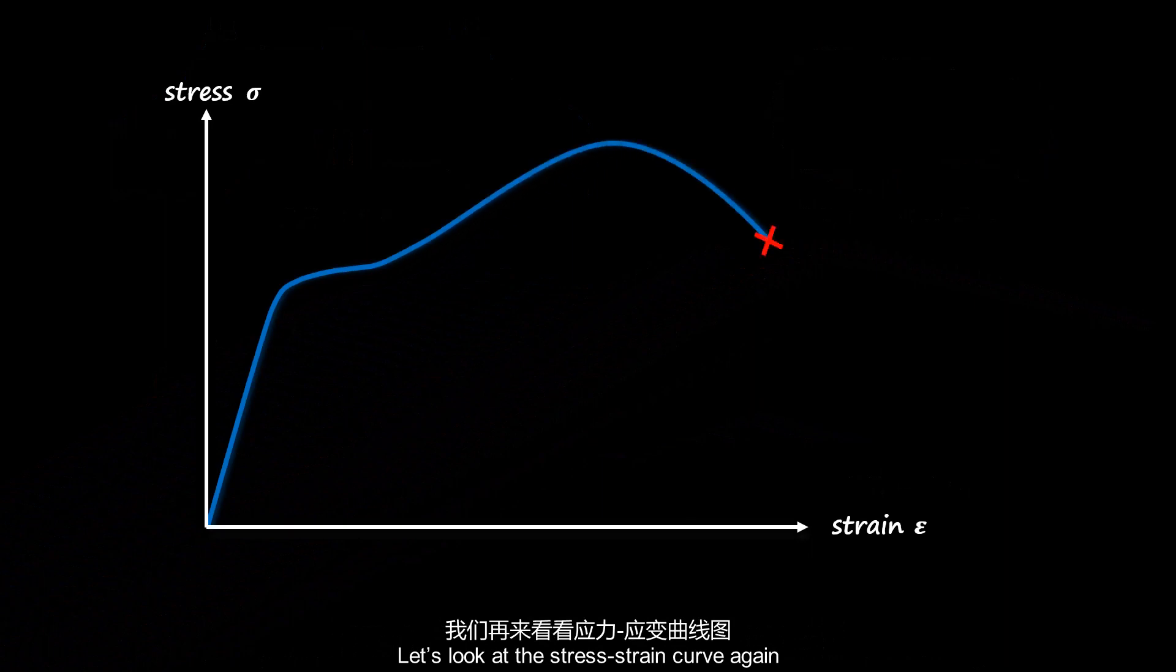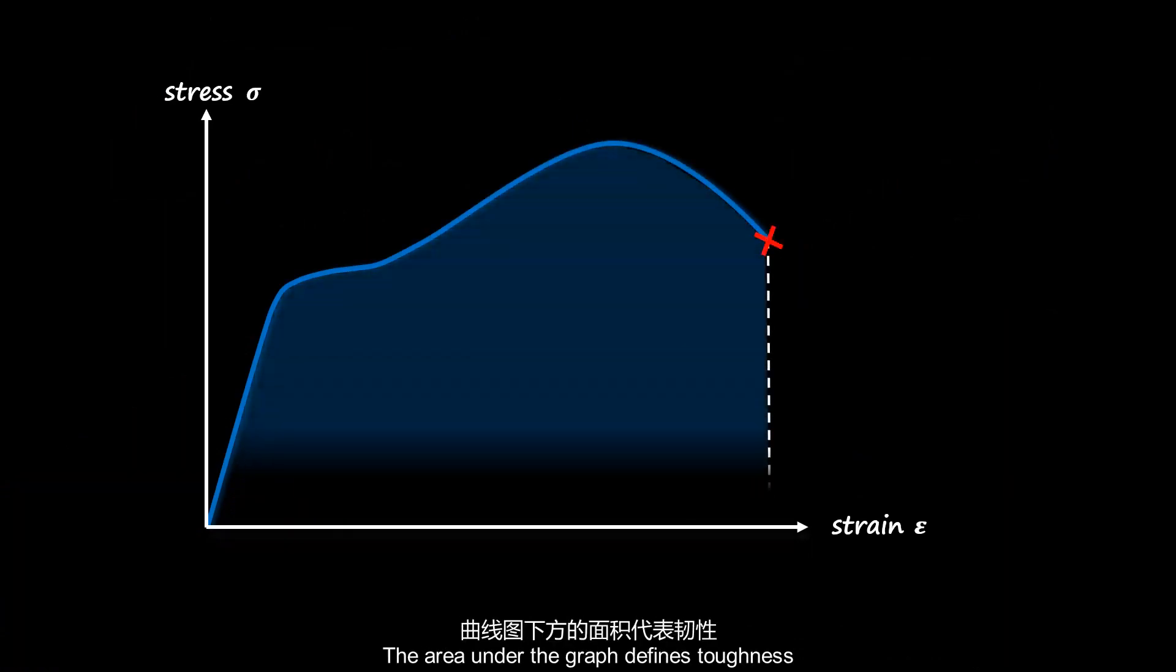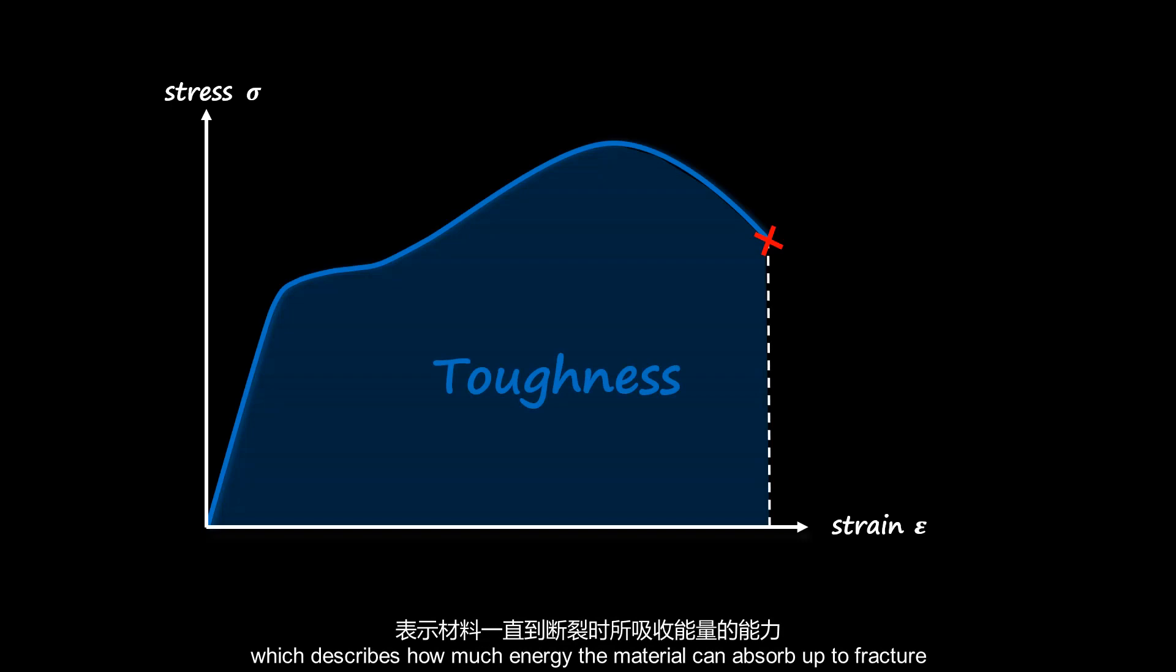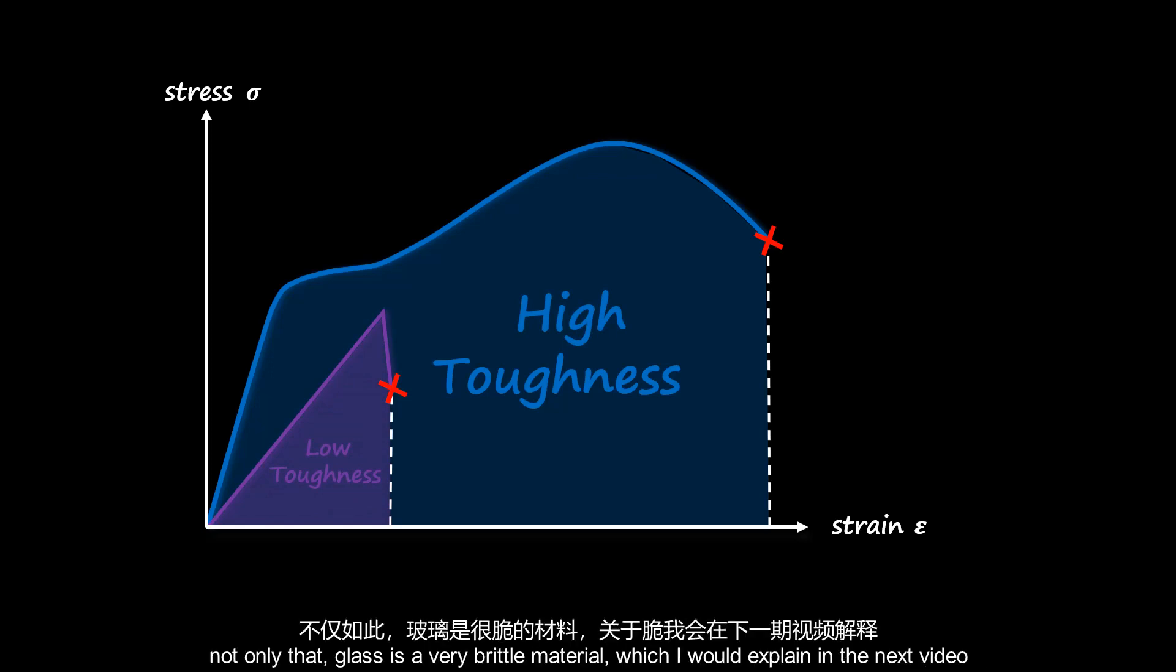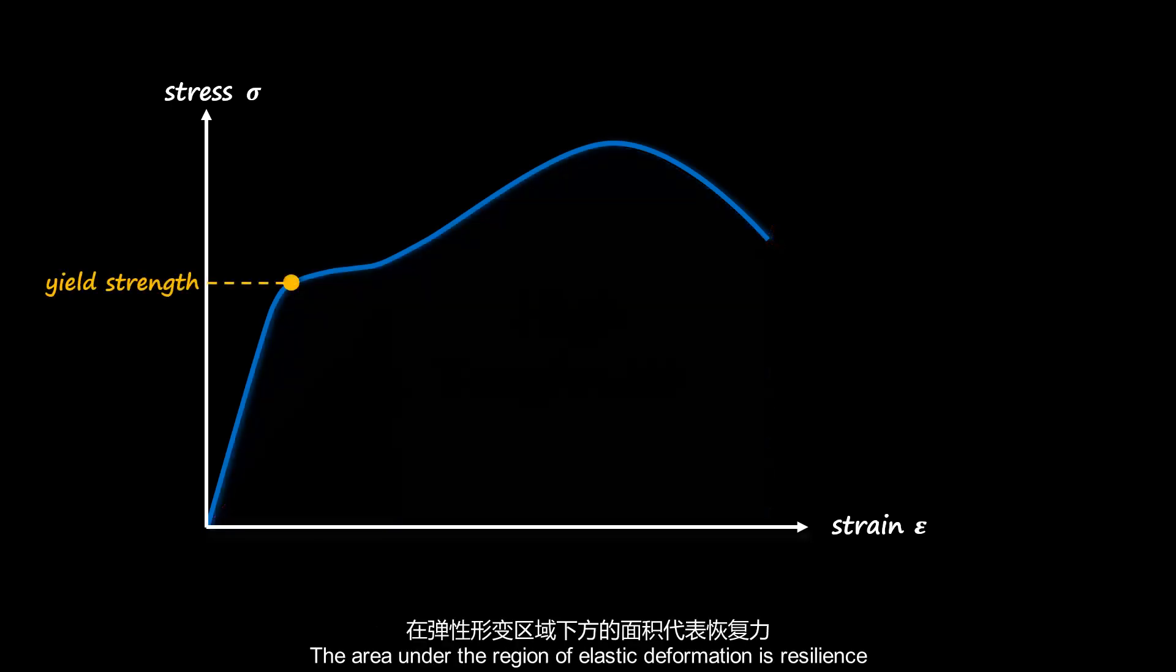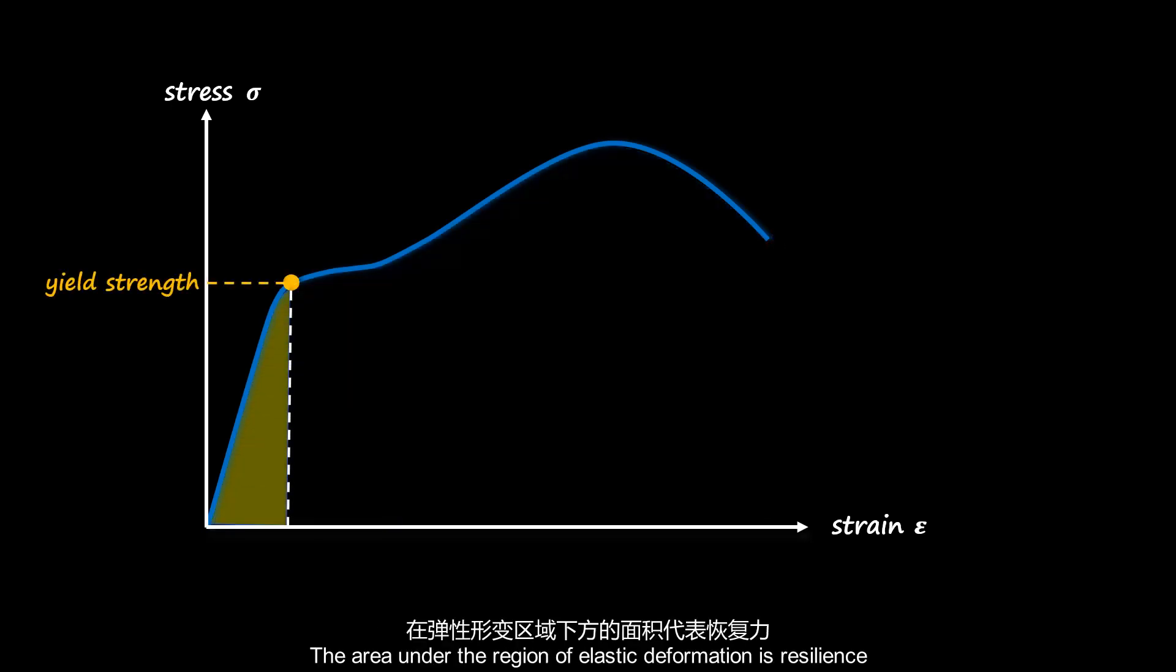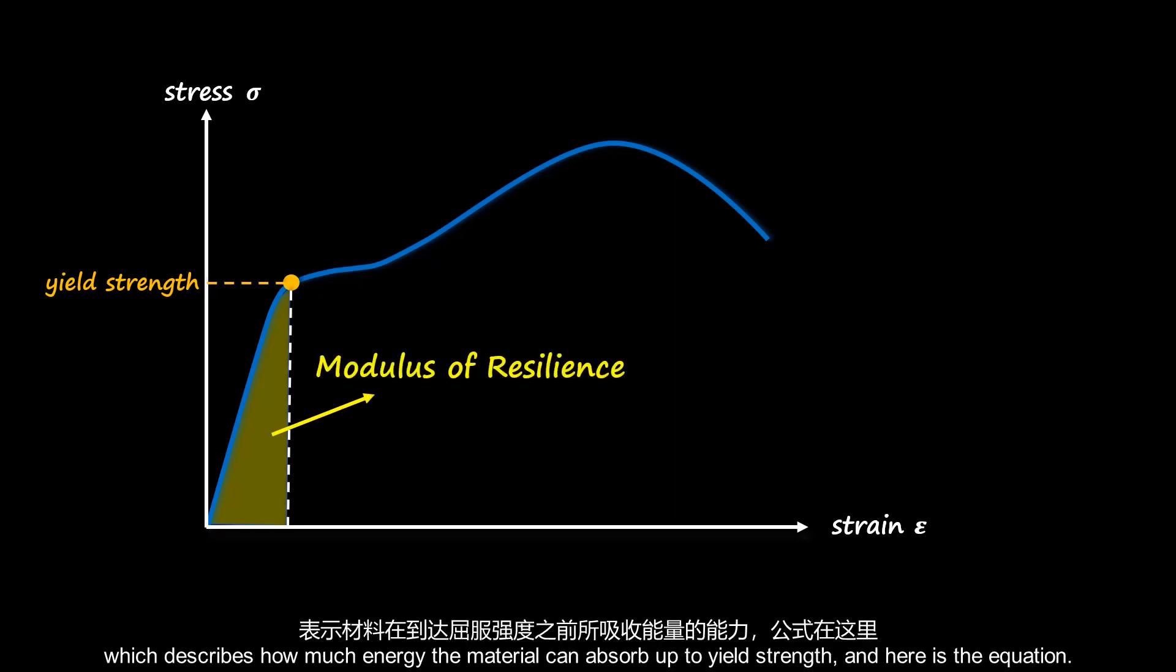Let's look at the stress-strain curve again. The area under the graph defines toughness, which describes how much energy the material can absorb up to fracture. Glass has low toughness because it has smaller area, so glass cannot absorb too much energy and it breaks easily. Not only that, glass is a very brittle material, which I will explain in the next video. The area under the region of elastic deformation is resilience, which describes how much energy the material can absorb up to yield strength. And here is the equation.